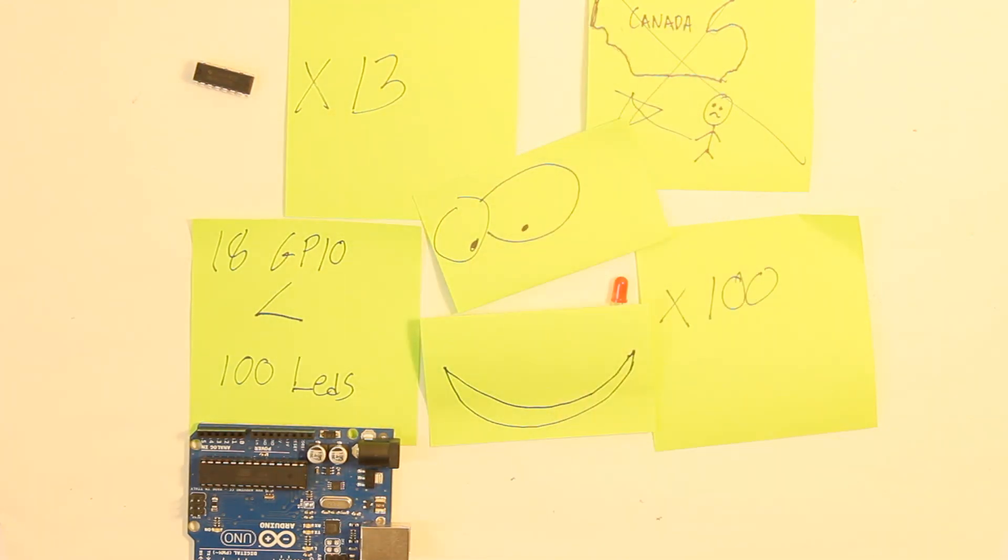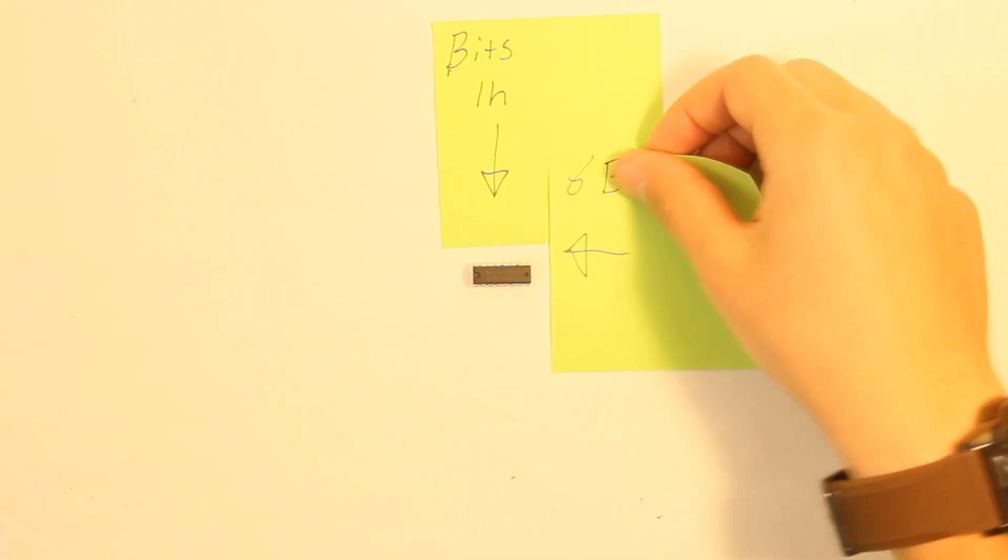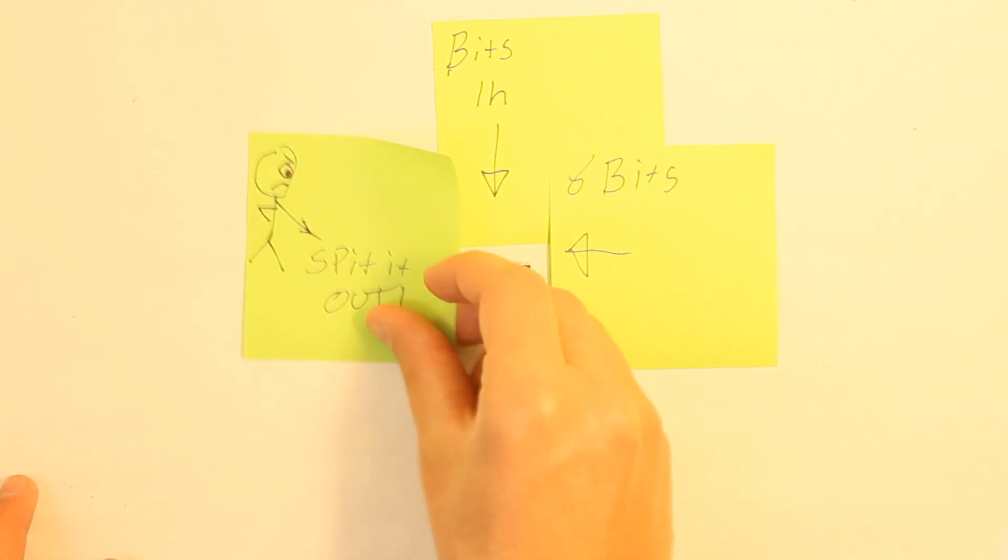So how do shift registers work? A shift register latches data bit by bit. A typical shift register, such as the one I have, will hold eight bits. When the controller tells it to, the shift register spits out those eight bits onto its outputs.